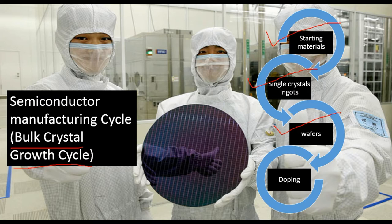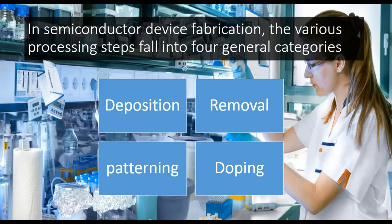We will call those layers epitaxial layers. When talking about semiconductor device fabrication, we can classify all concepts among four categories: the first is deposition, the second is removal, the third is patterning, and the fourth is doping. In this lecture we will study about deposition, or epitaxial growth on that seed. Removal refers to etching.